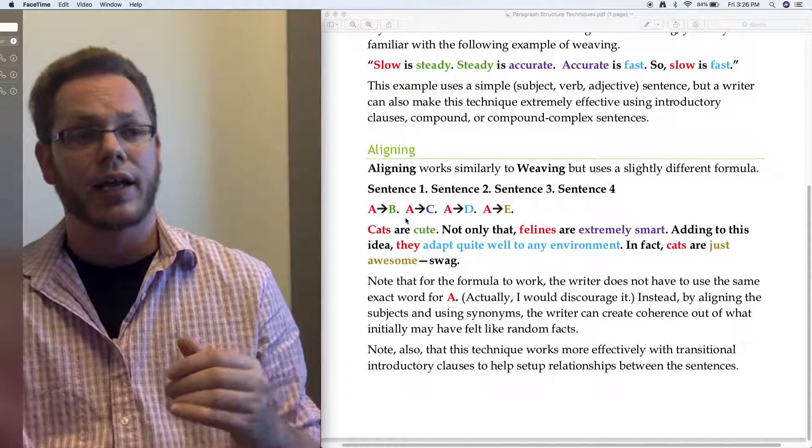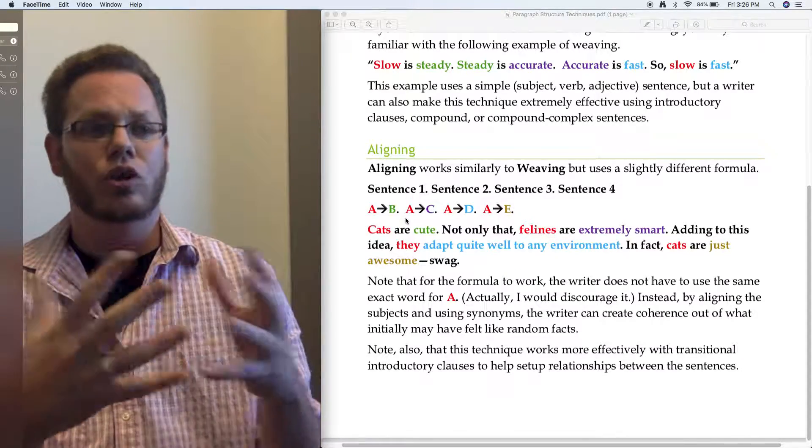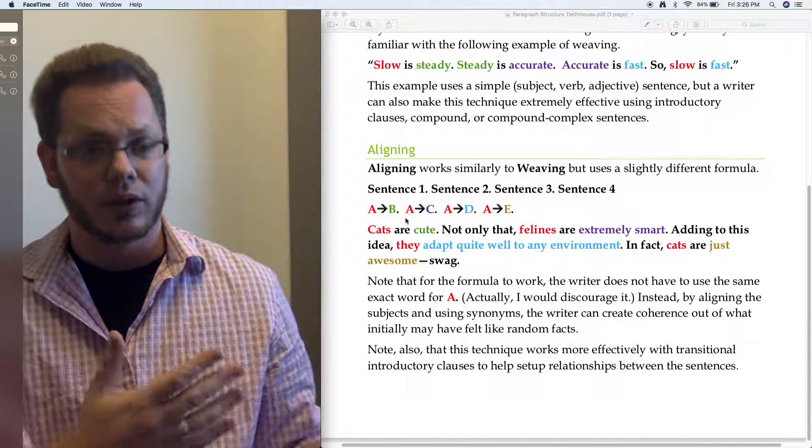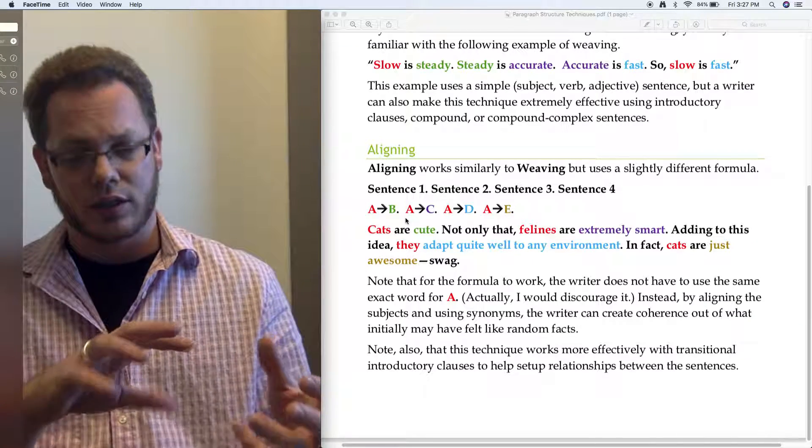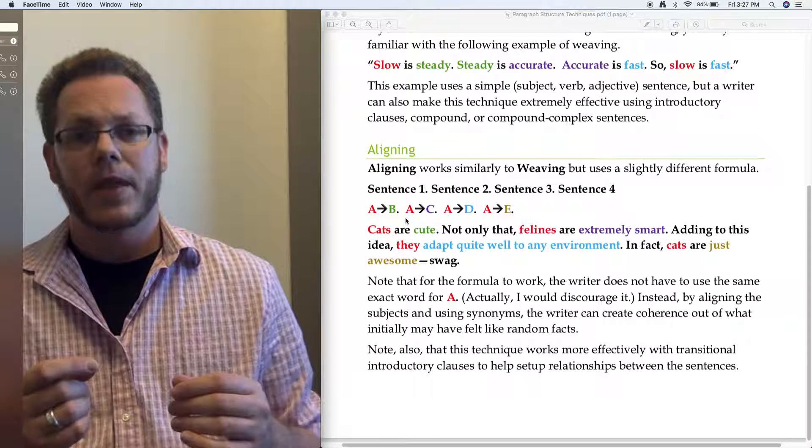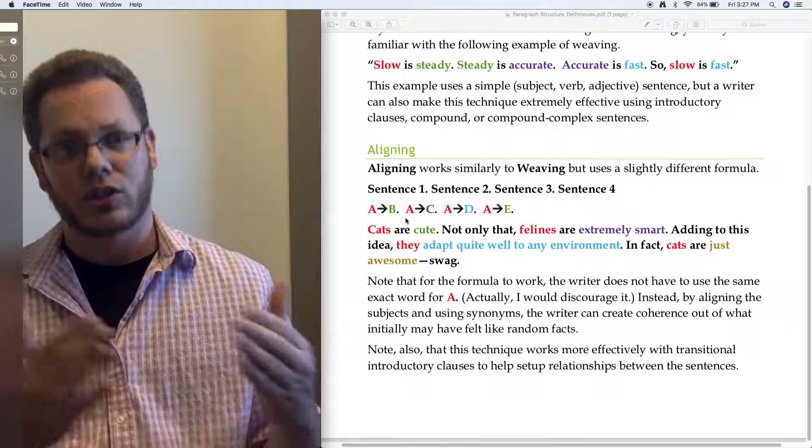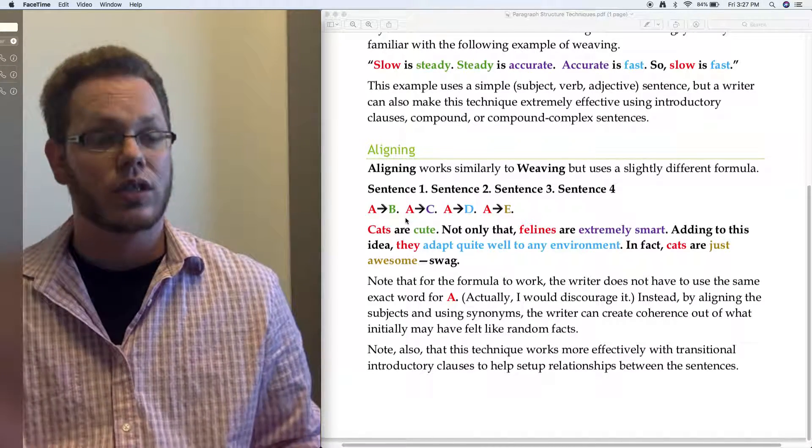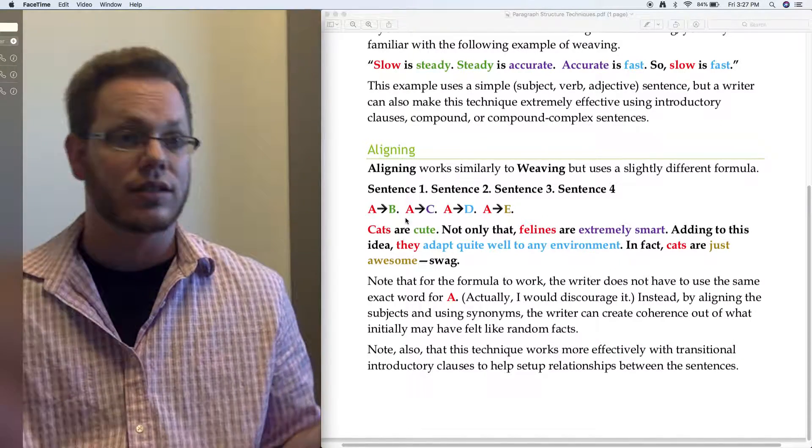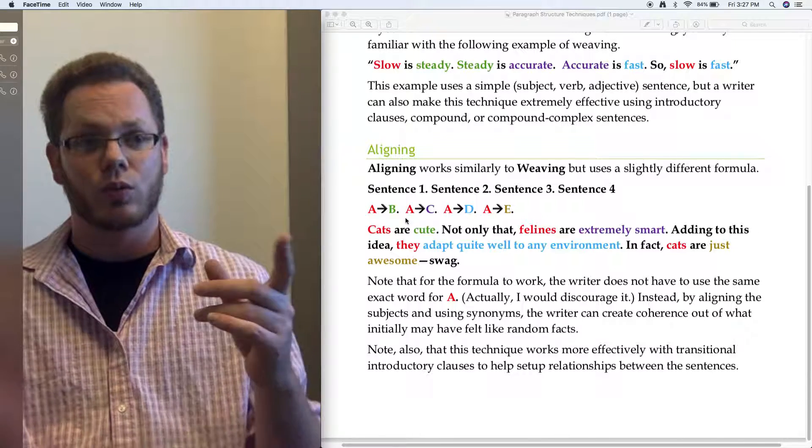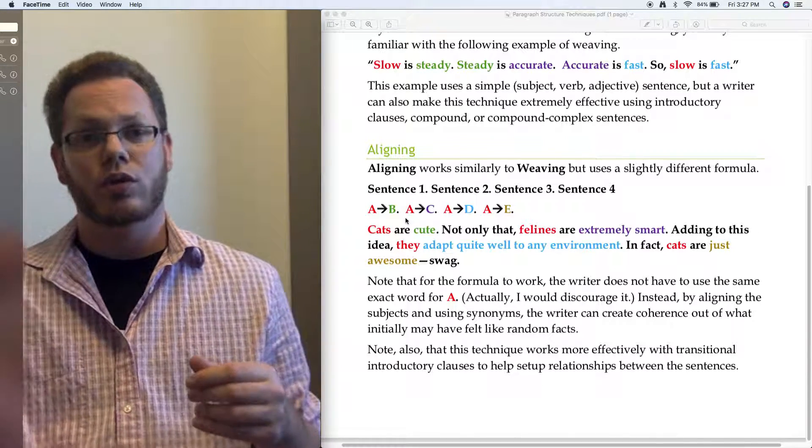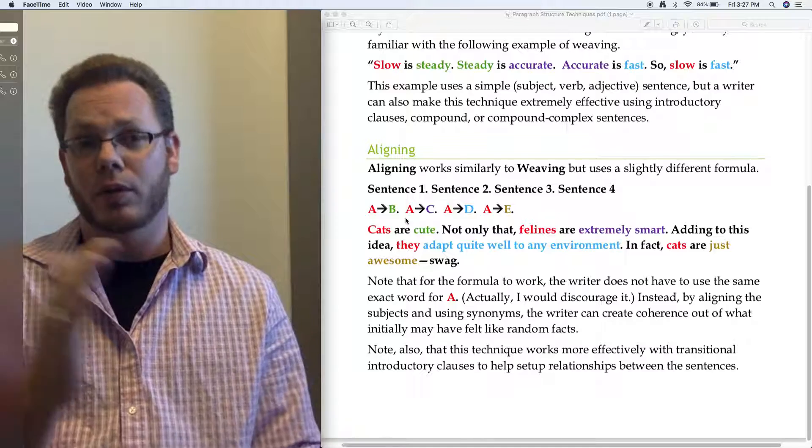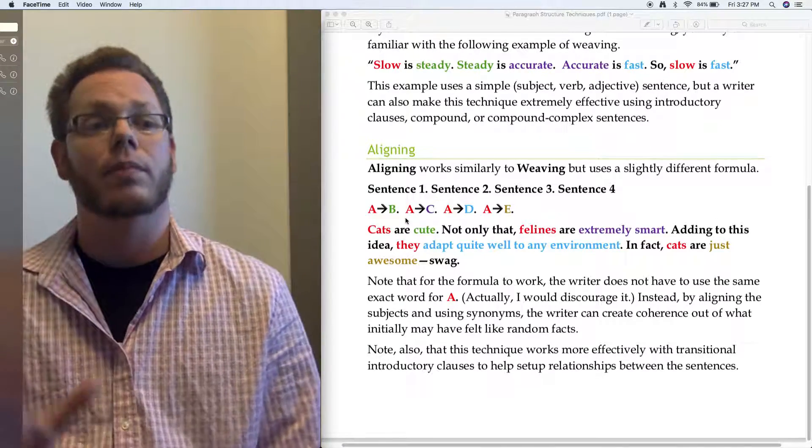In this example, as opposed to the one before, I also kind of try and model using transitional phrases, even though these aren't like the most amazing transitional phrases. In this case, it's just trying to show that we're building, and I'm using additive, not contrastive transitional phrases there. They're not embedded all that much and there's not a whole lot of content. It's just to model the structure. Note that for the formula to work, the writer does not have to use the same exact word. We can use synonyms and I would even discourage it. So you don't have five sentences that end up feeling like a bullet point list. This is a danger with the aligning model.